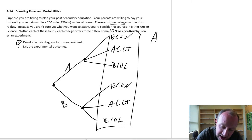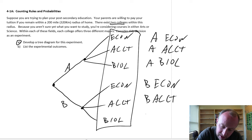I have college A economics, college A accounting, college A biology, college B Econ, college B accounting, and college B biology.